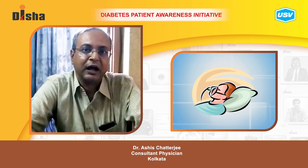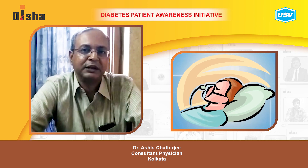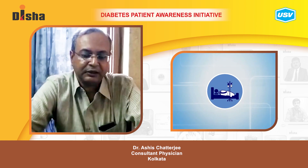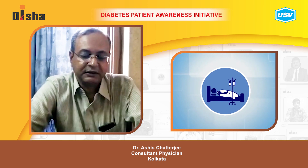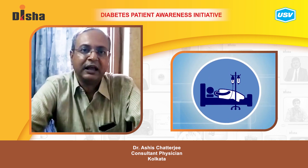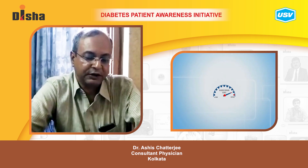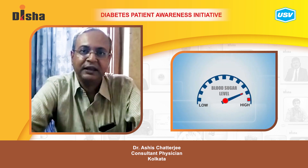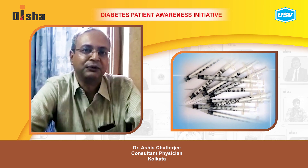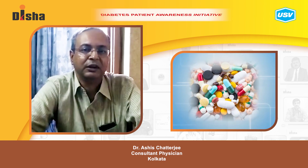Those patients who are unconscious and have gone into coma have to be admitted and given intravenous glucose. For hyperglycemic patients, if the blood sugar is very high, you require insulin to bring down the blood sugar, and then of course you can convert the patient to oral medication.